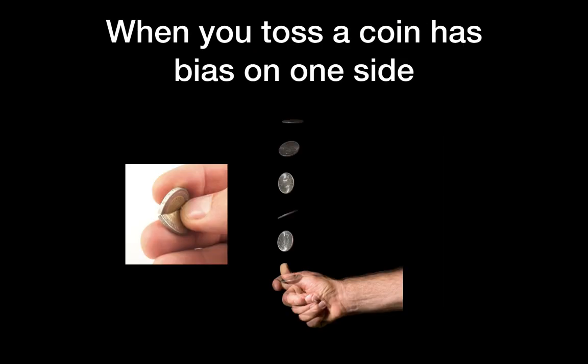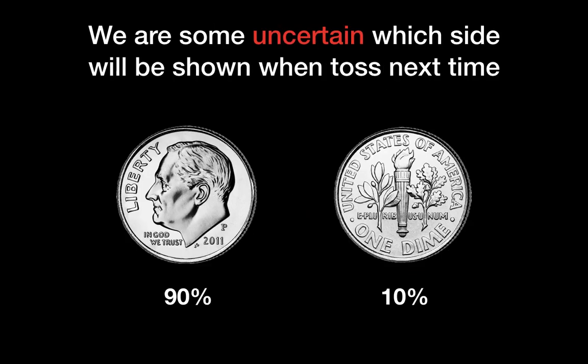Here's another example: when you toss a coin that has a bias on one human face side, then you have like 90% for the human face and 10% for the other side. In this case, we can say that we have some uncertainty about which side will be shown when you toss next time.